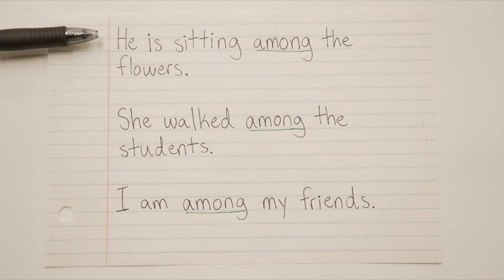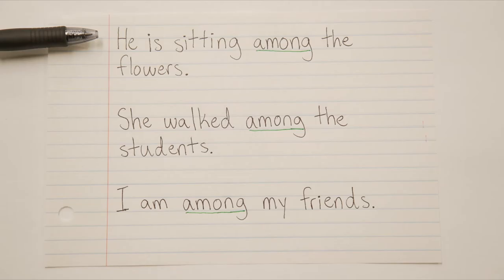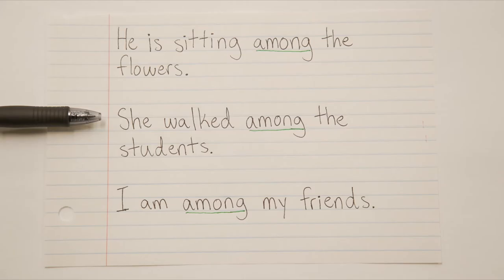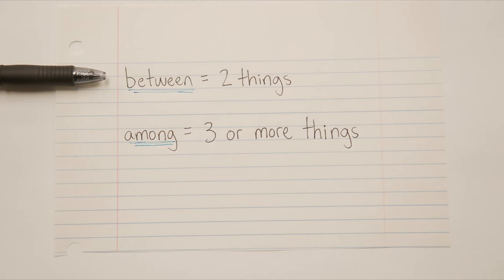He is sitting among the flowers, implying that there are three or more flowers. She walked among the students. I am among my friends. So, very simple: you've got two things, you use between; you've got three or more things, you use among.